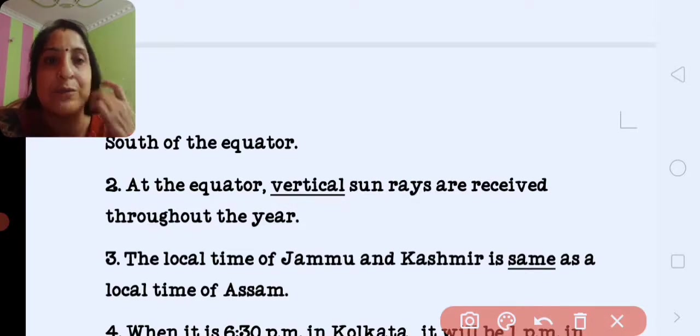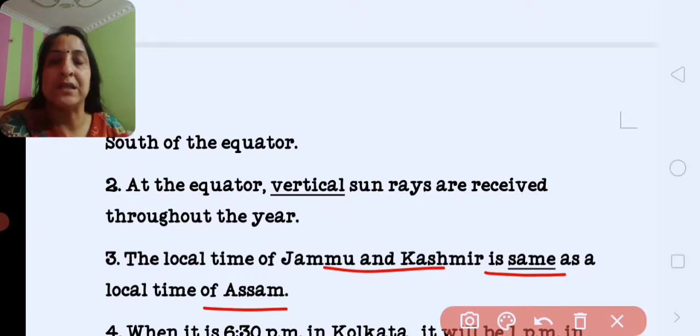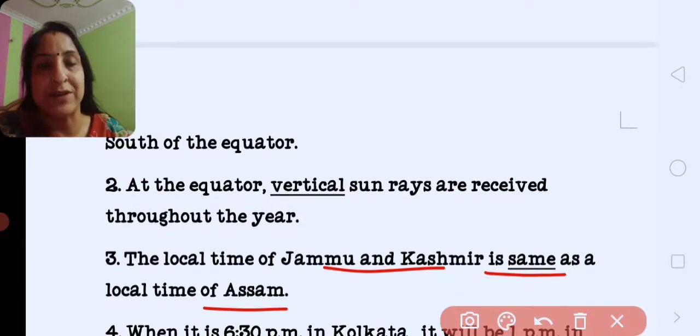The local time of Jammu and Kashmir is dash as the local time of Assam. The answer is same, because Jammu, Kashmir and Assam lie in the same time zone of the world. That's why time is the same.